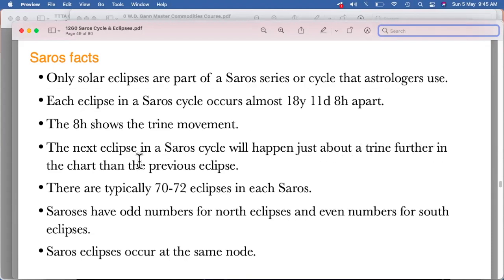The next eclipse in a Saros cycle will happen just about a trine further in the chart than the previous eclipse. Now this is something really important for us to understand because there will be a time difference accordingly.